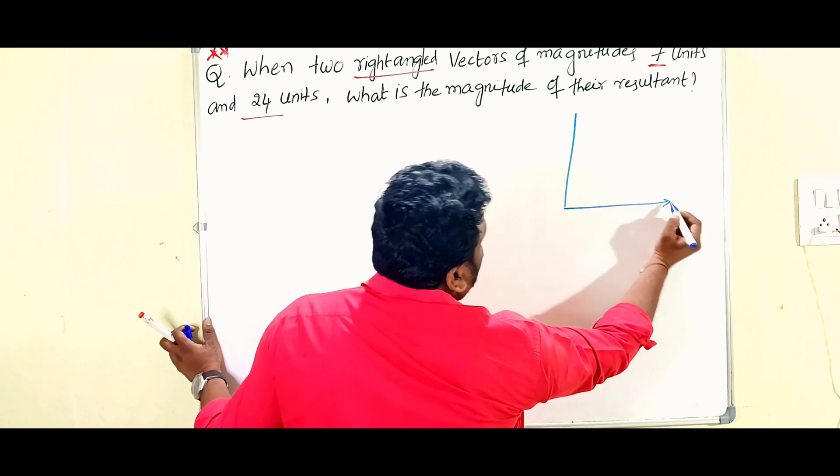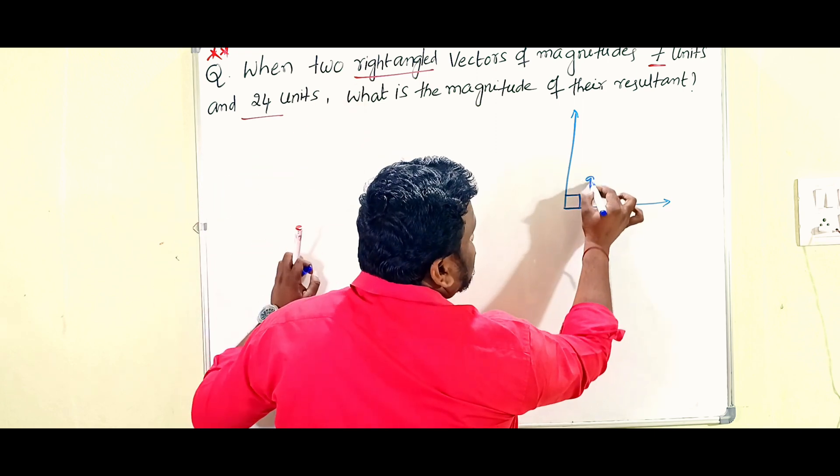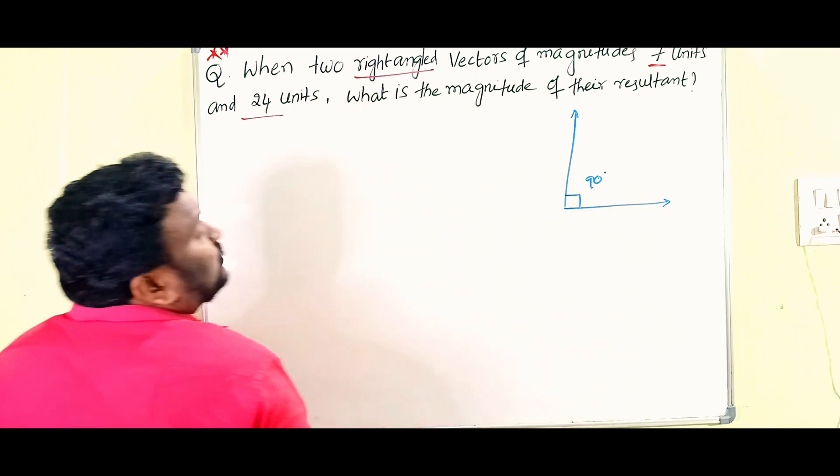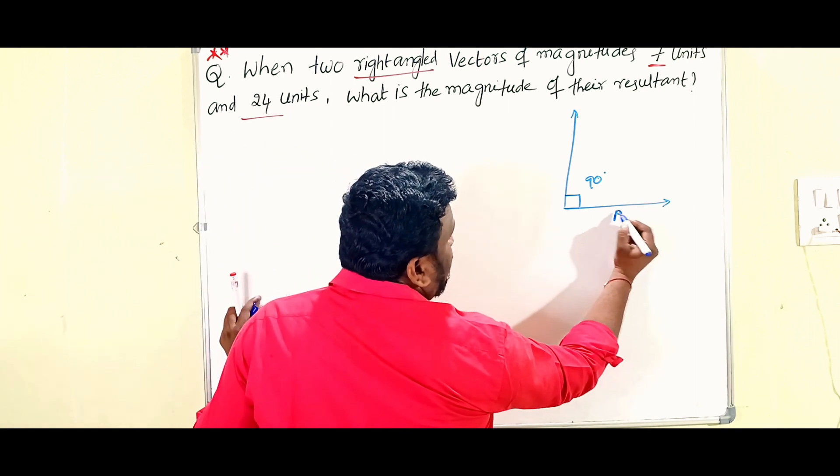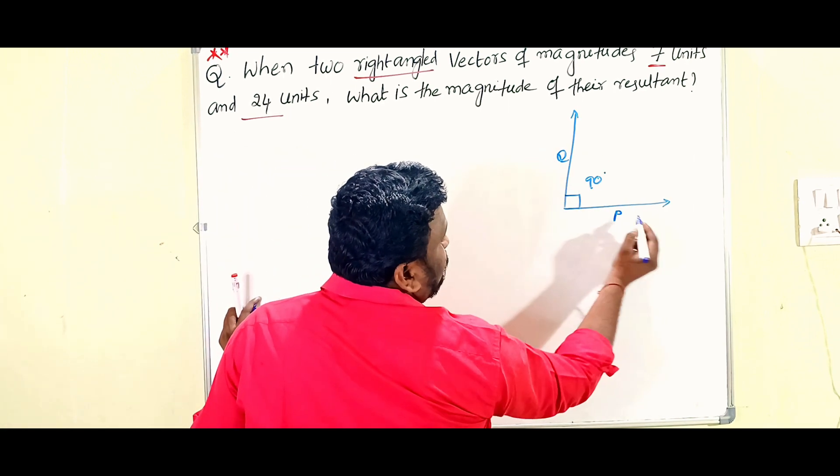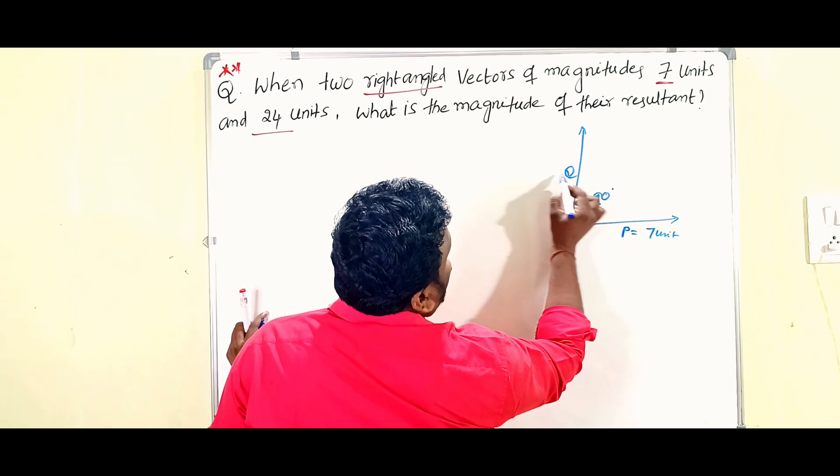What he was given: the angle should be given as right angle, that's why the angle is 90 degrees. So what you have to find out? For example, I am taking this is P and this is Q. P value is given as 7 units.